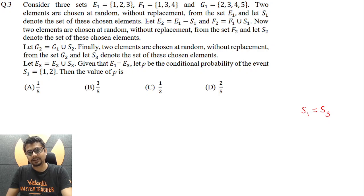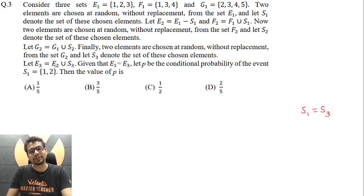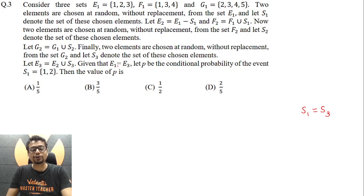E3 should have exactly the same three elements. When you select two elements from E1 and get S1, S1 will have two elements. That means E2 would have one element, and the same E2 is being used here also. So S3 would also have two elements. Hence, for E1 to be equal to E3, it essentially means S1 should be equal to S3.